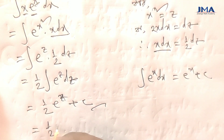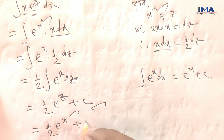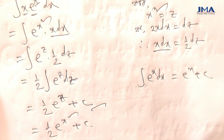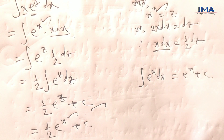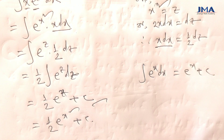e to the power z is e to the power x squared, so the final answer is e to the power x squared plus c. See you next time.